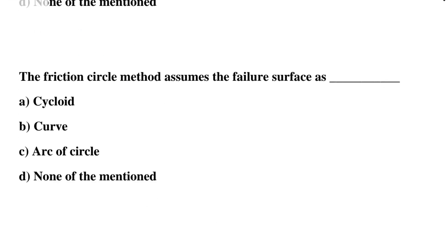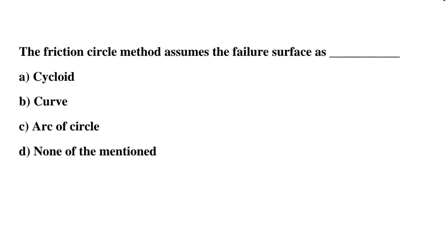Next question: the friction circle assumes the failure surface as — Option A: cycloid, Option B: curve, Option C: arc of failure, Option D: none of the mentioned. The correct answer is Option C, arc of failure.